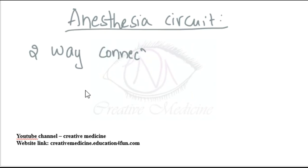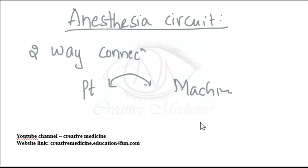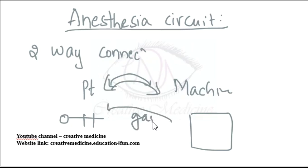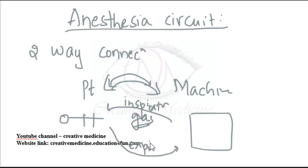We have learned about the anesthesia machine in the last class. We have an anesthesia machine and we also have the patient. The connection between this anesthesia machine and the patient is called the anesthesia circuit. This circuit will bring inspiratory gas towards the patient and will also take expiratory gas away from the patient into the machine or to the outside.